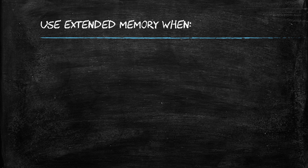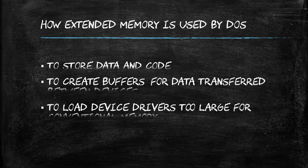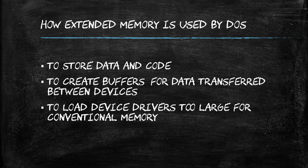You would use extended memory on MS-DOS when you need to run a DOS program that requires access to more than 1 megabyte of memory. Extended memory is also useful for running DOS programs that need to use high-performance devices such as network adapters and CD-ROM drives. It is used by DOS programs to store data and code, to create buffers for data being transferred between devices, or to load drivers that are too large to fit into conventional memory.